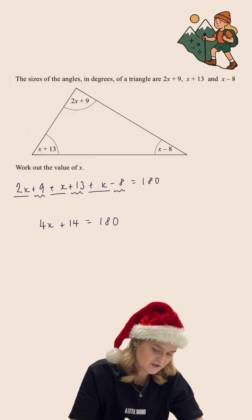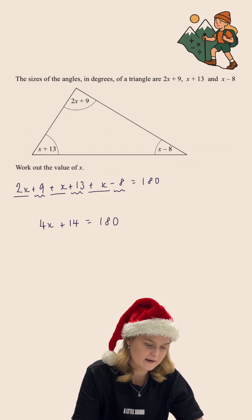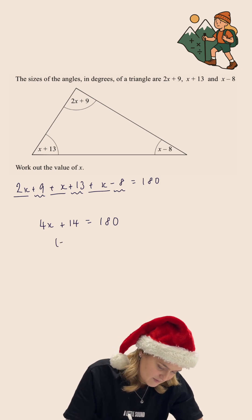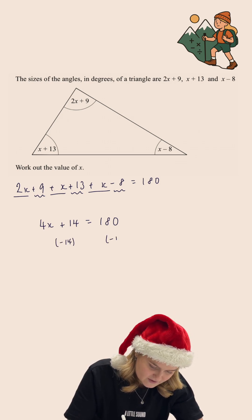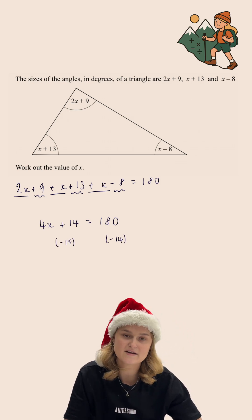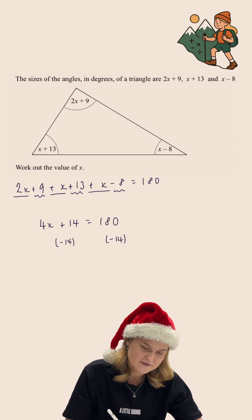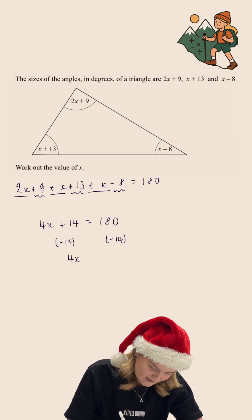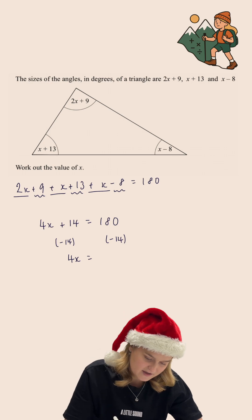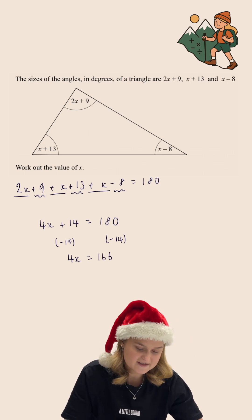The first thing that I'm going to do is get rid of the plus 14. The inverse of adding 14 is subtracting 14. So we are going to subtract 14 from both sides of the equation. On the left hand side we will have 4x and on the right hand side we will have 166.